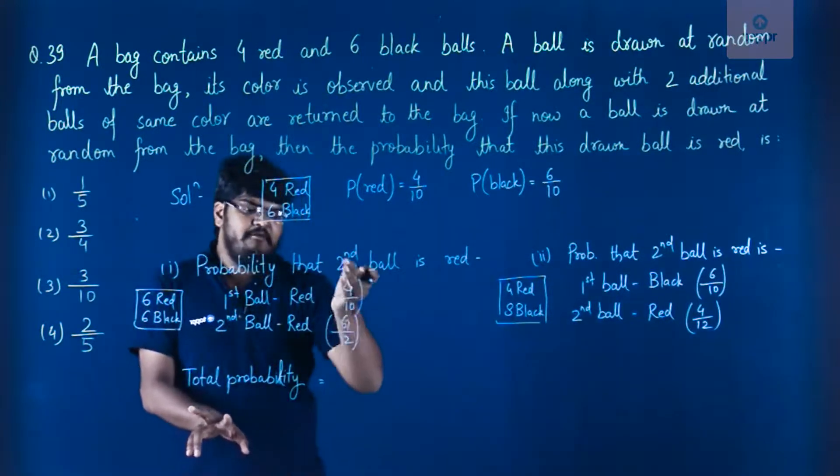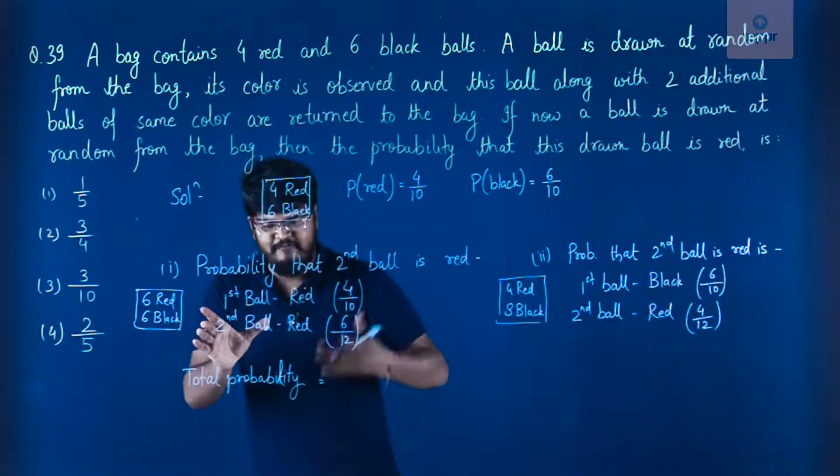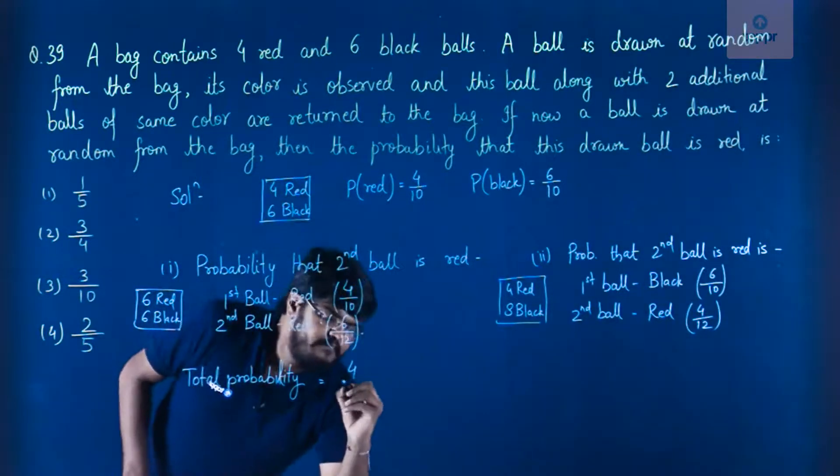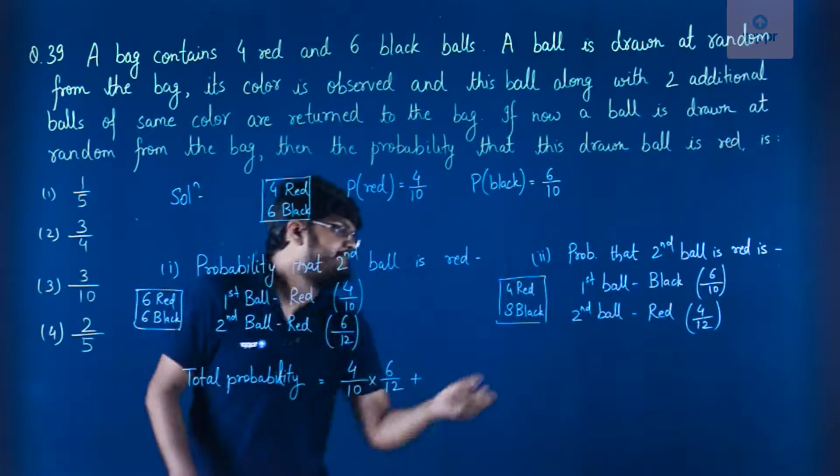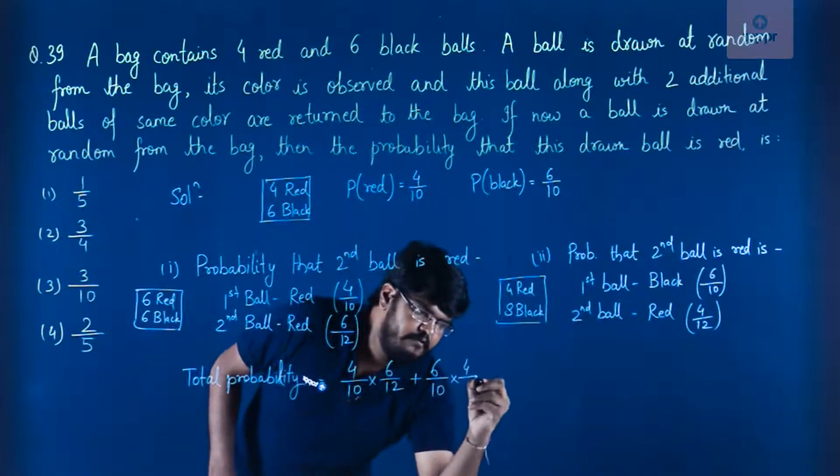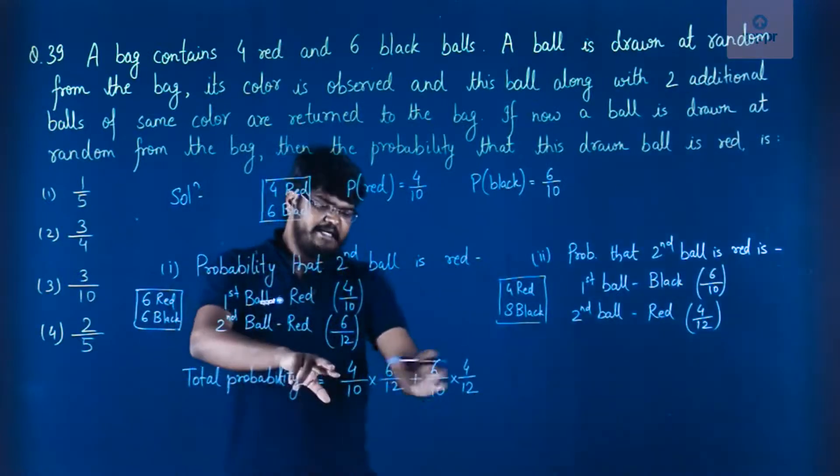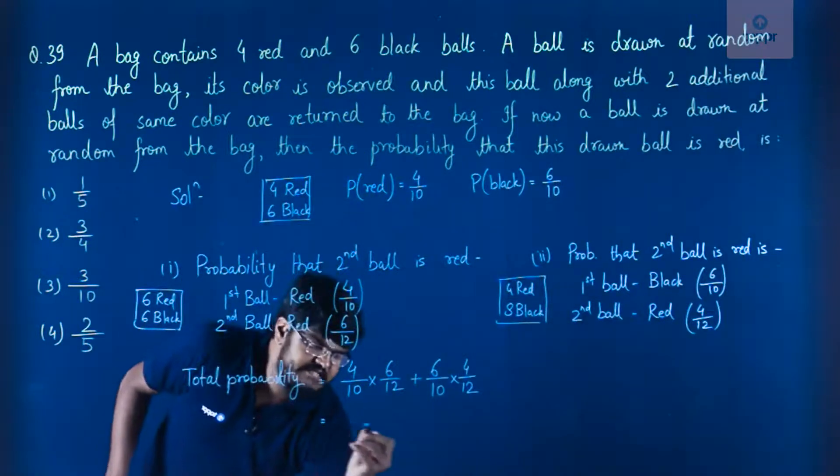So probability will be equal to 4 by 10 into 6 by 12, because this is one entire case. So it will be taken as fundamental principle of multiplication. So 4 by 10 into 6 by 12 plus 6 by 10 into 4 by 12. You can see the numerators are same in both the values. The denominator is too, so I simply add them up.